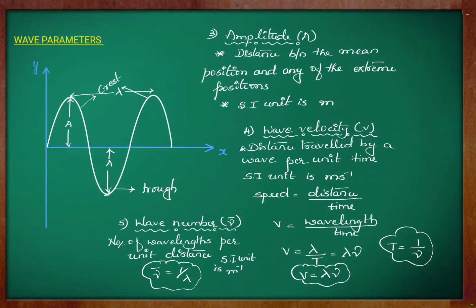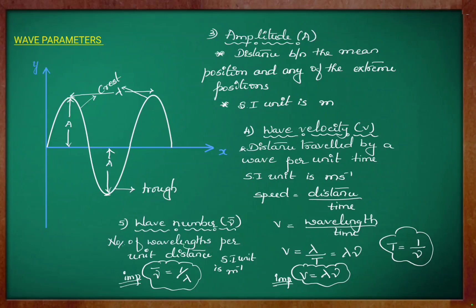A wave can be defined by all these parameters. The formulas relating wave number and wavelength, as well as the speed of a wave with its wavelength and frequency, are important. You also need to remember that light travels with the same speed in vacuum and that speed is constant. It is represented by C, which has a value of 3 into 10 to the power 8 meter per second.